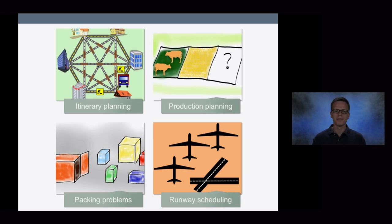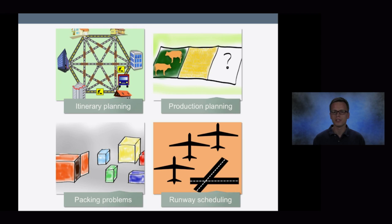So what do I do? I use math to look at real-world problems — problems like the itinerary planning problem, where one tries to find the best order in which to visit multiple locations; production planning problems, where one tries to find the best way to use a given resource such as farmland; packing problems, where one tries to fit as many items as possible into a suitcase; or, as an aerospace engineer, runway scheduling problems, where an airport has a runway and we try to maximize the number of aircraft that can use that runway within a given time frame.